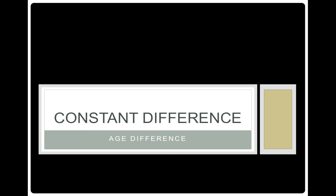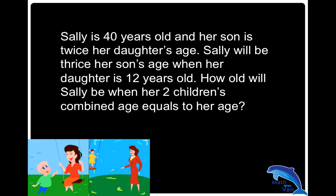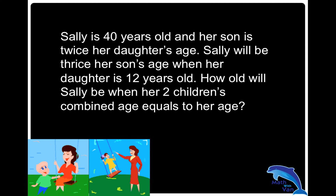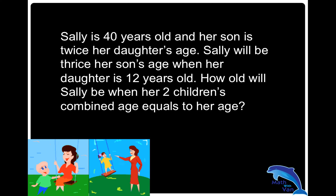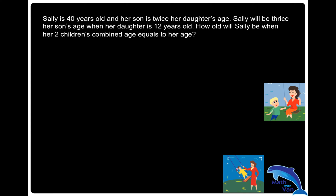In most cases of age-related questions, the concept of constant difference may help you solve that particular kind of question easily — not all the time, but most of the time. For example, I gave birth to my eldest when I was 28, so I will always be 28 years older than her, regardless of whether it is five years ago or 15 years into the future. Now let's take a look at this question: Sally is 40 years old and her son is twice her daughter's age. Sally will be twice her son's age when her daughter is 12 years old. How old will Sally be when her two children's combined age equals her age?